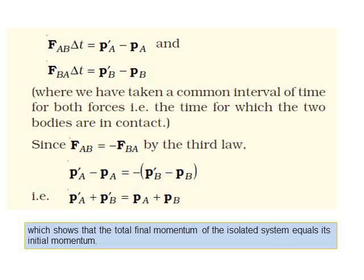By putting the values of FAB and FBA from the above equations, you got PA dash minus PA equals to minus of PB dash minus PB means PA dash plus PB dash is equals to PA plus PB.